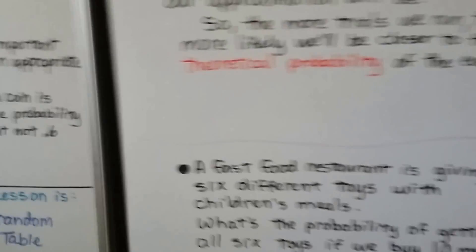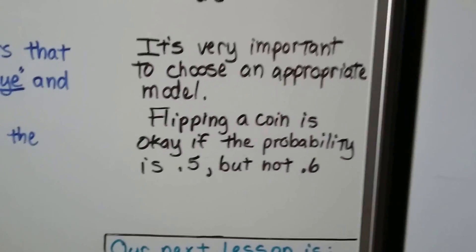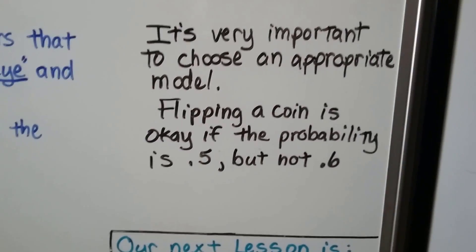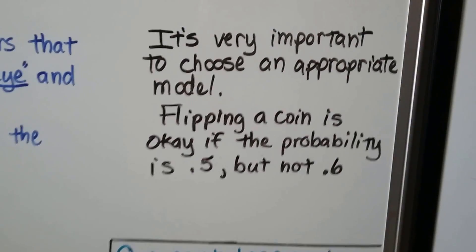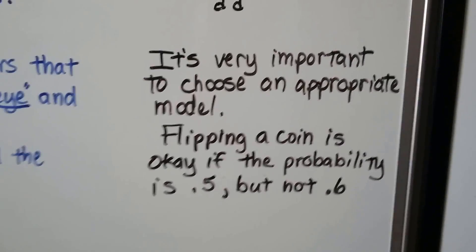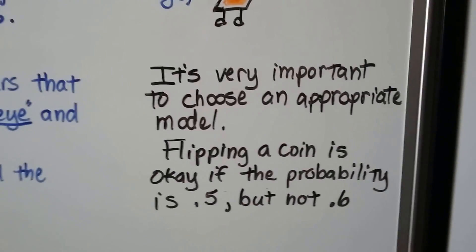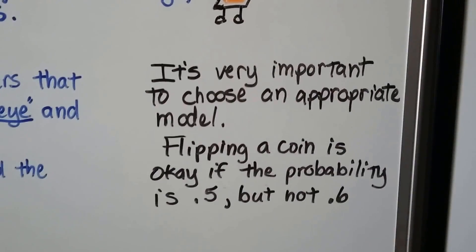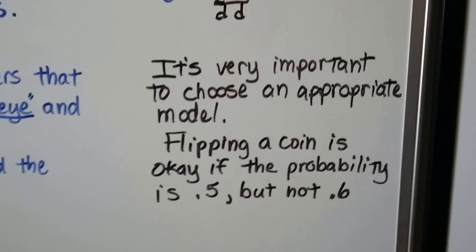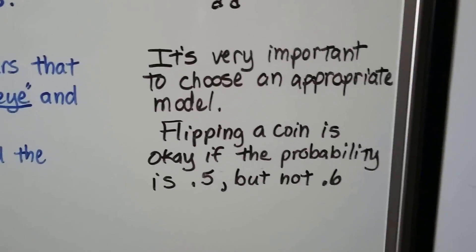So it's very important to choose an appropriate model. Flipping a coin is okay if the probability is .5 if it's half because half of the chance it could be heads, half of the chance it could be tails. But it wouldn't work if our probability was .6. Flipping a coin would not be a good model.